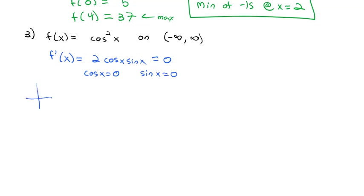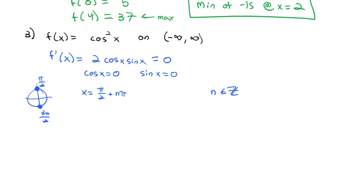Thinking about cosine of x on our unit circle: cosine is the x-coordinate, and it equals 0 at the top and bottom of the unit circle. So x equals pi over 2, and then moving a pi over to 3pi over 2 — meaning x equals pi over 2 plus n times pi, where n is any integer.